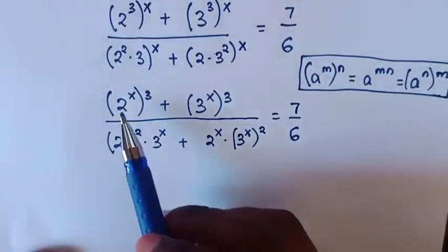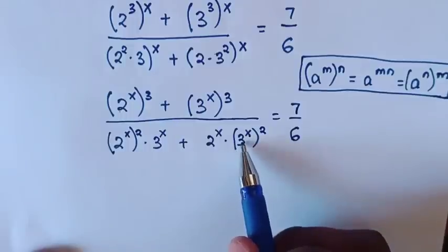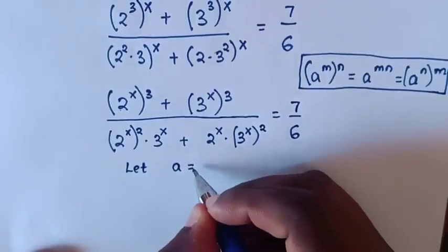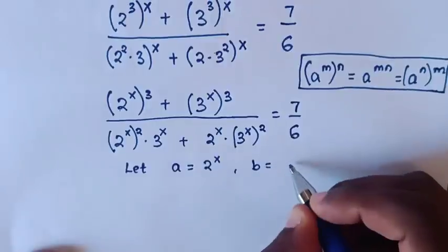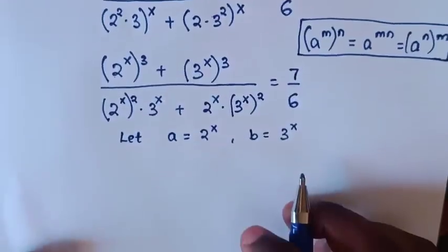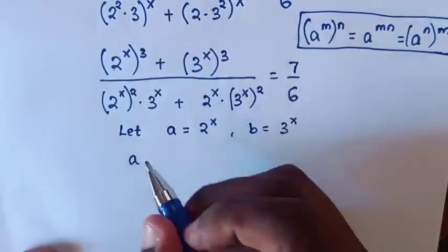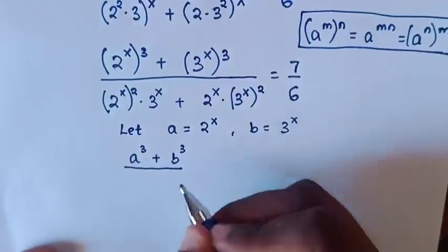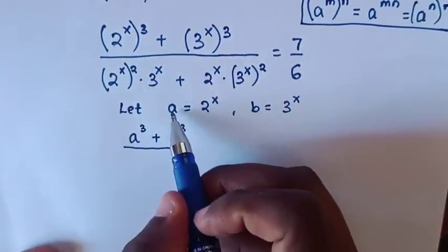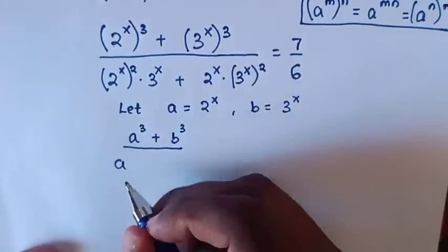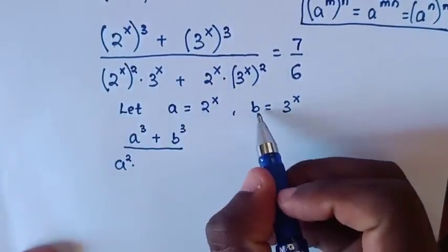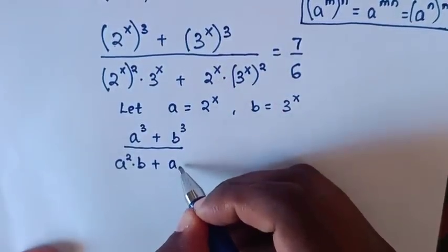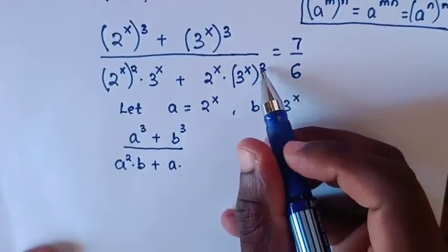We can see that 2^x and 3^x are common throughout the expression. So we let a = 2^x and b = 3^x. Substituting, the numerator becomes a^3 + b^3, and the denominator becomes a^2 · b + a · b^2, giving us (a^3 + b^3) / (a^2·b + a·b^2) = 7/6.